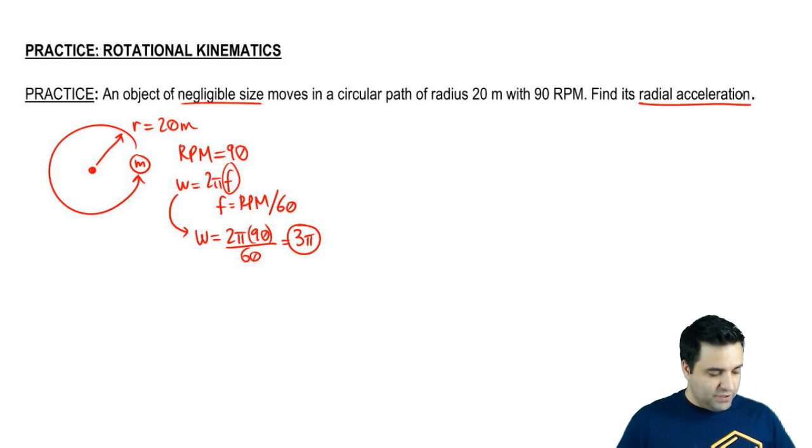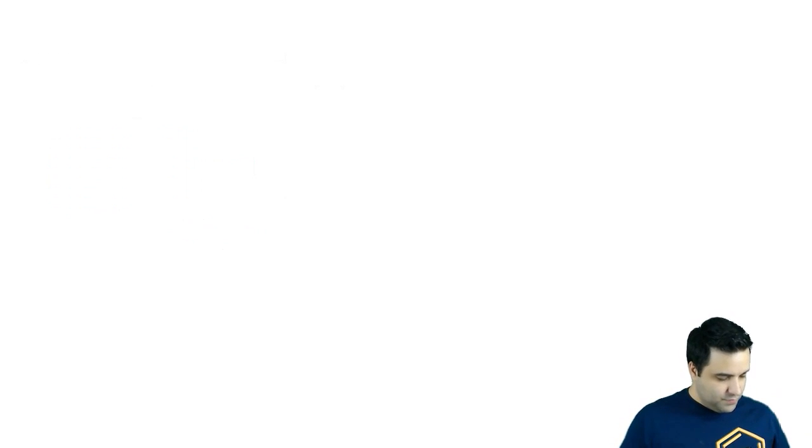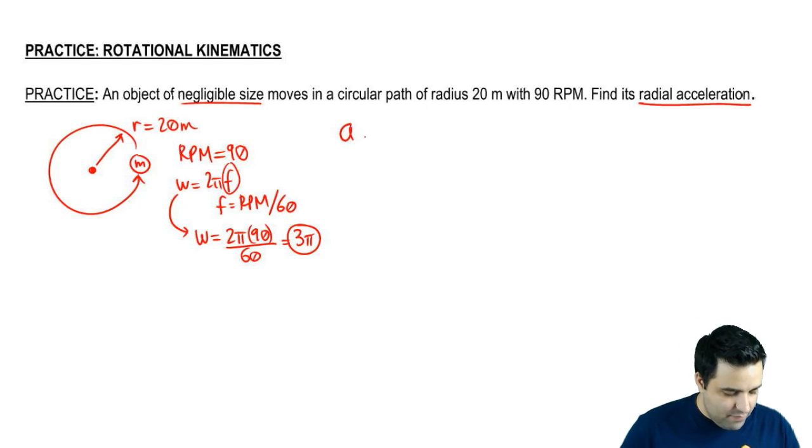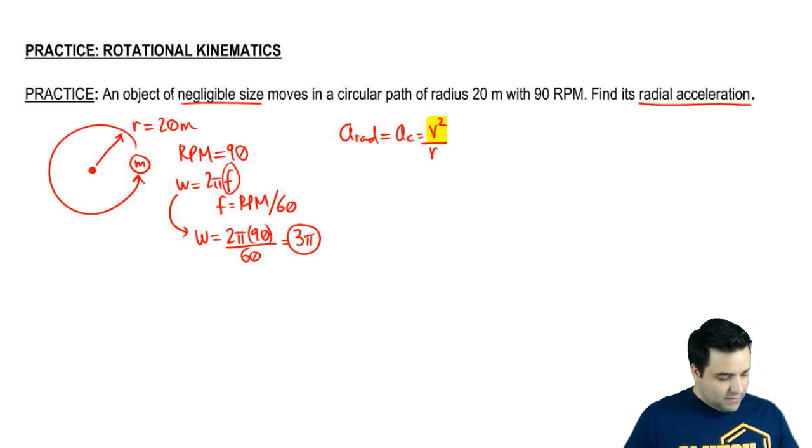We want to know the radial acceleration. Radial acceleration is A rad, which is the same thing as AC. And it's V squared over little r. Now if you look around, you'll notice that we don't have V. Luckily, if you remember, there's a second version of this equation, which is r omega squared. And we have both of these numbers. So we're just going to plug those in. Very simple question.